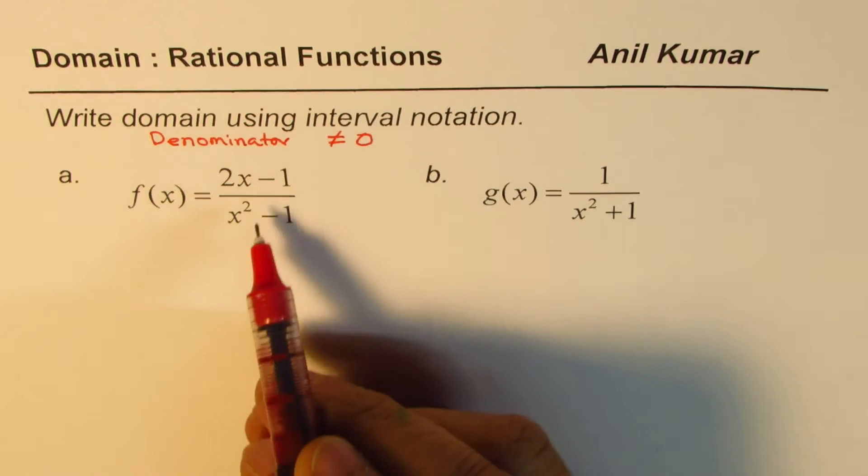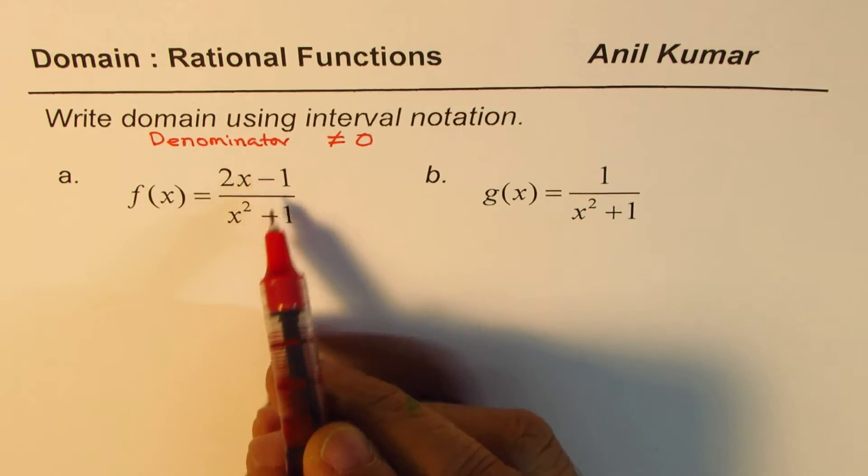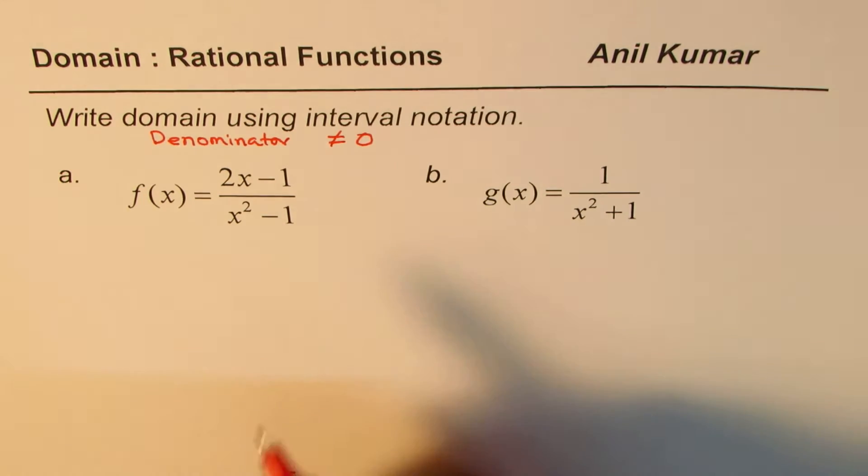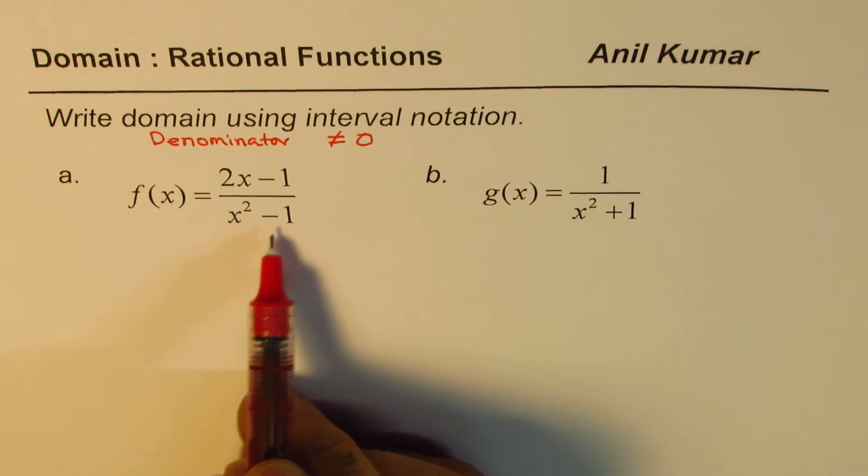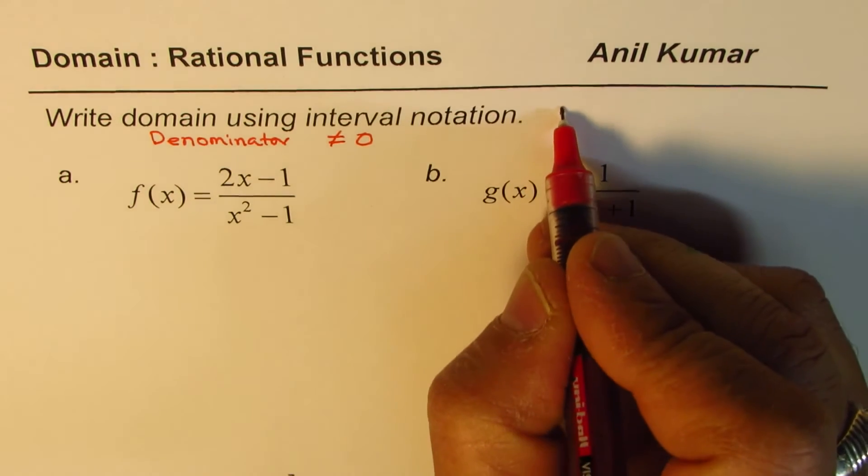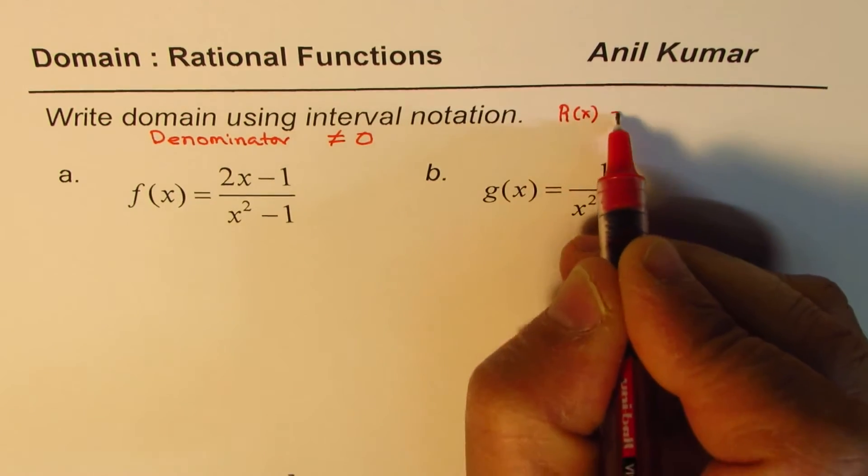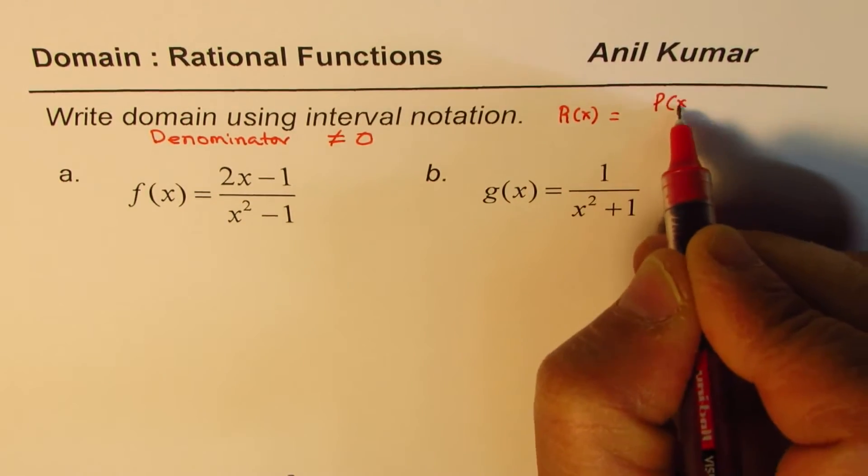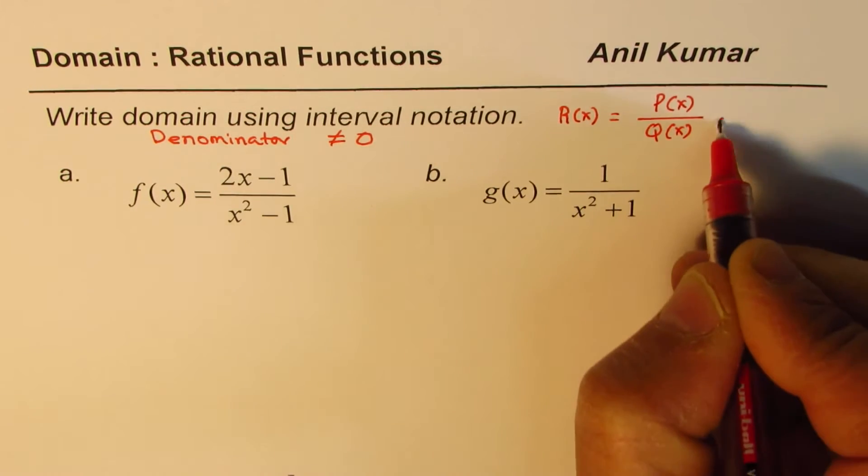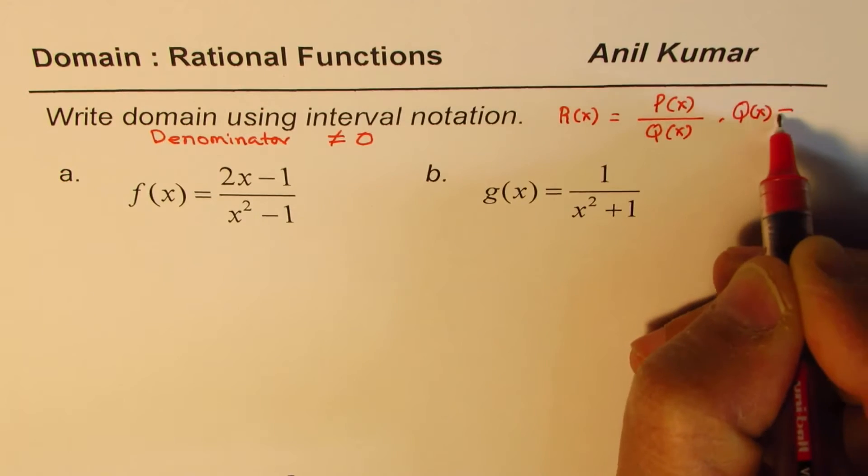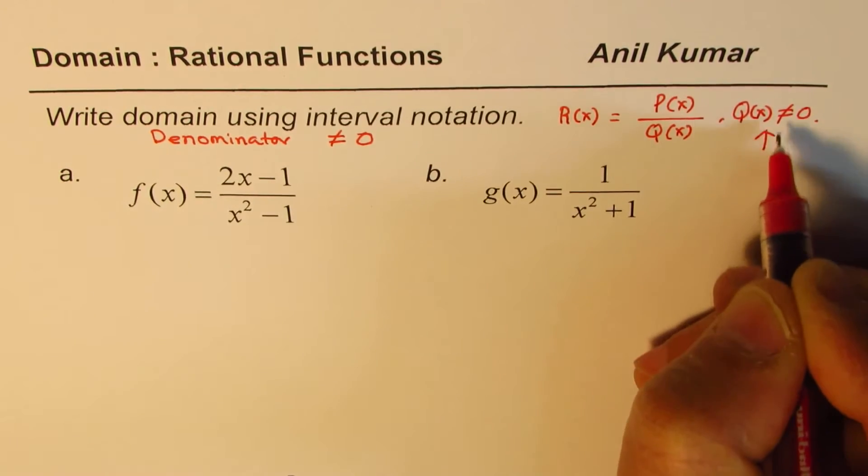As you know, rational functions are quotient of two polynomials, and individually, the polynomials in the numerator and denominator will not have any restrictions. So the one which is in the denominator, we normally write a rational function as R equals to p over q, where q of x is not equal to 0. That gives restrictions.